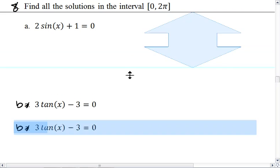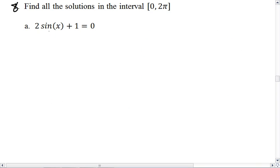For part A, we need to first solve for sine of x, so we get 2sin(x) = -1, sin(x) = -1/2, so x = sin inverse of -1/2.